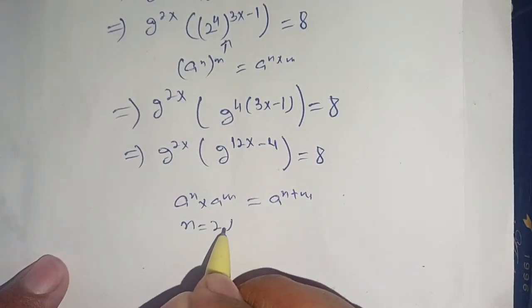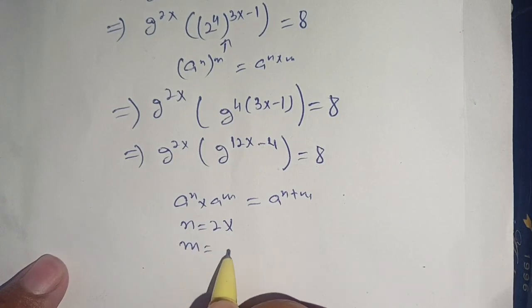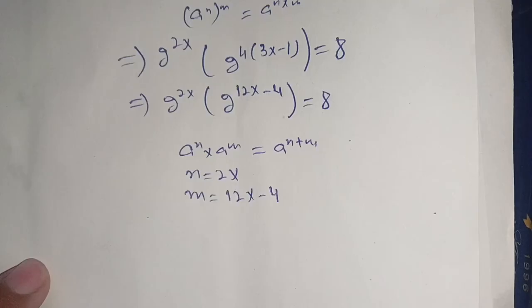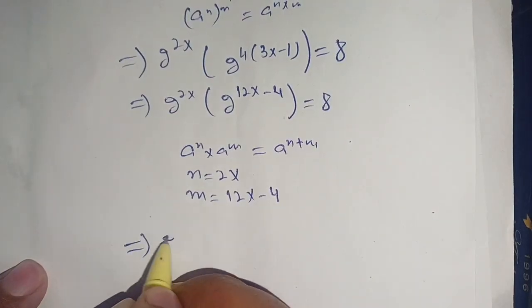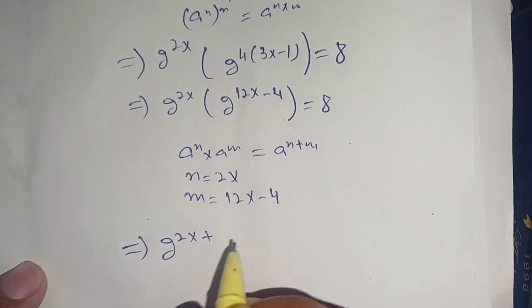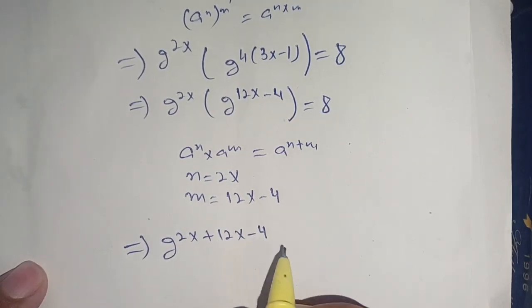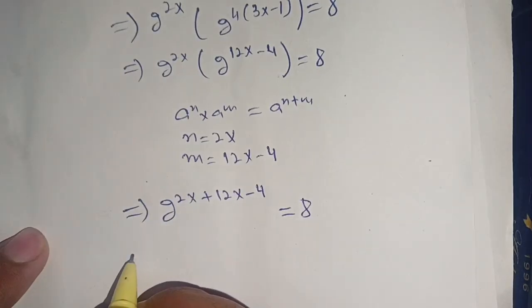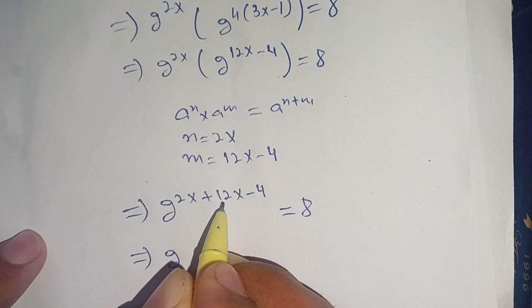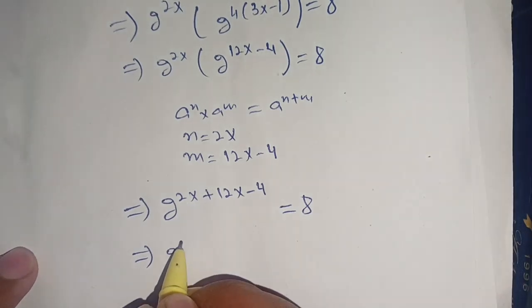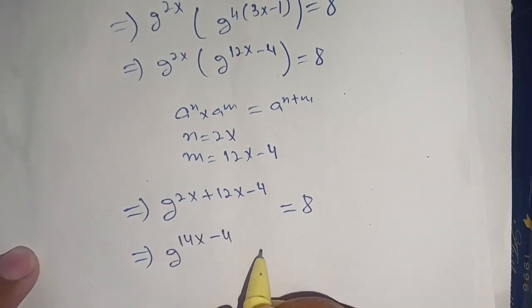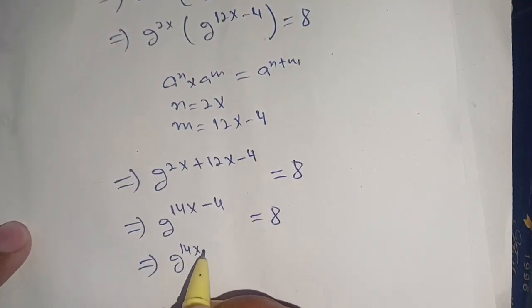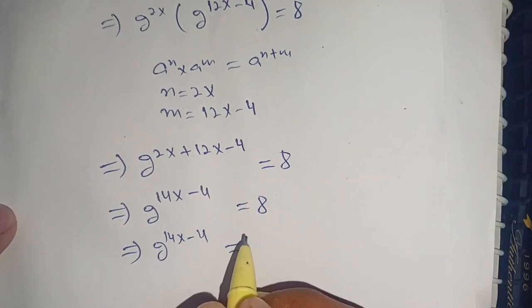Here n = 2x and m = 12x - 4. Applying this identity we get 2^(2x + 12x - 4) equals 8, which implies 2^(14x - 4) equals 8.